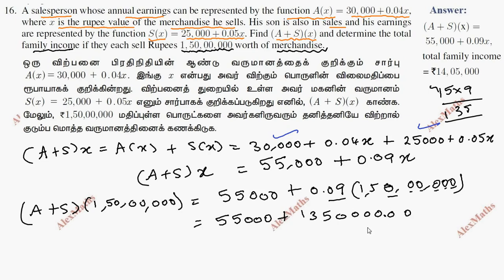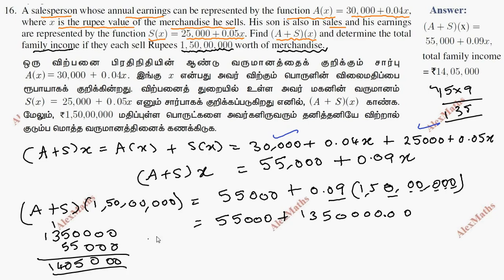Now we will add this: 55,000 plus 135,000. Adding these together gives the total answer of 1,40,500. So the final answer is 1,40,500.